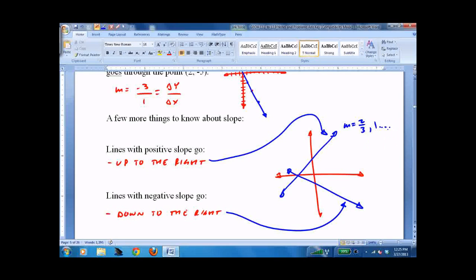This is a slope of 2 thirds, something like that. This is a slope of negative 1 half, negative 3 fourths, something like that. So if you don't do a quick check when you graph something, you're just asking for trouble.